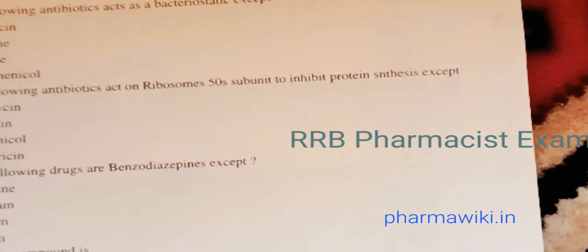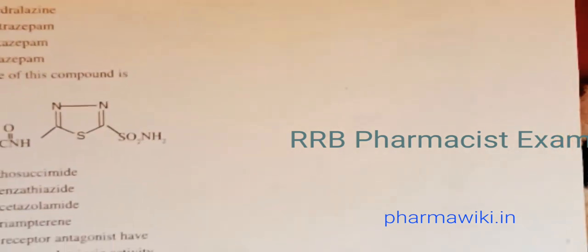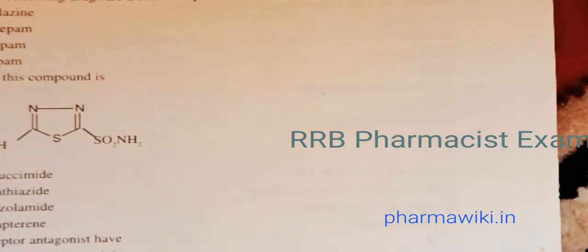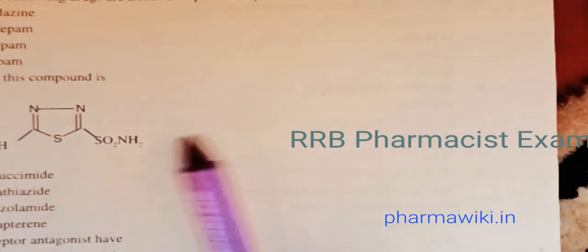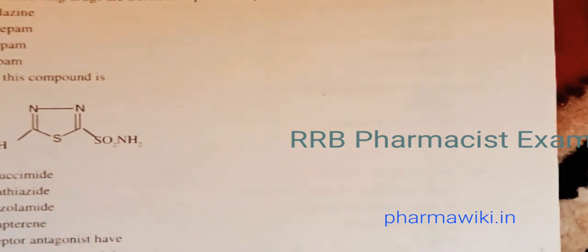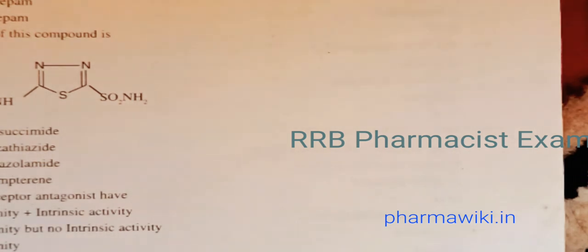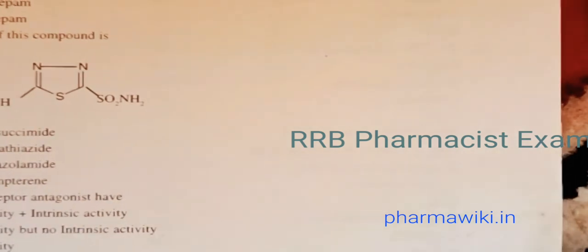Question 84: All of the following antibiotics act on ribosomes' 50S subunit to inhibit protein synthesis except amphotericin. Question 85: Name this compound — the answer is acetazolamide. Question 86: Receptor antagonists have affinity alone but no intrinsic activity.